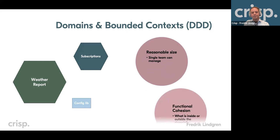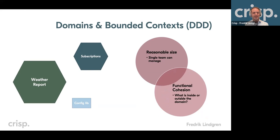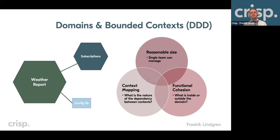There should be functional cohesion. When looking at what should be inside or outside the weather report service as a potential dependency, the question is: does this logic deal with weather reporting, or is it actually something else? And one of the things that is really interesting when looking at dependencies and their management is how our stuff relates to the things we depend on — what's the nature of that dependency?